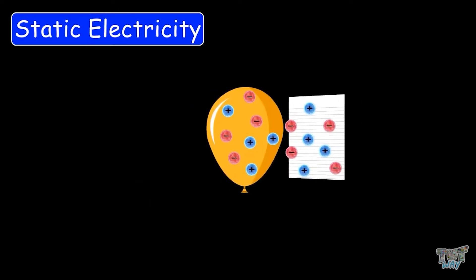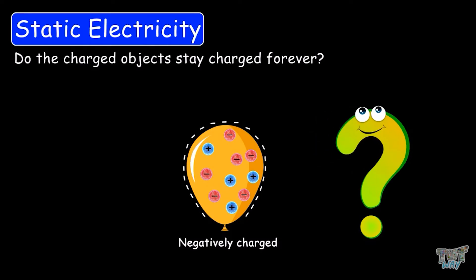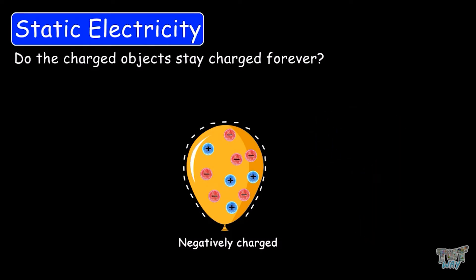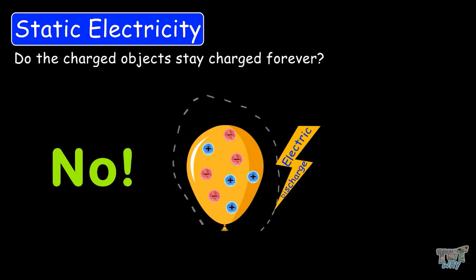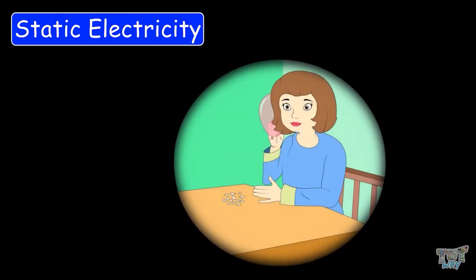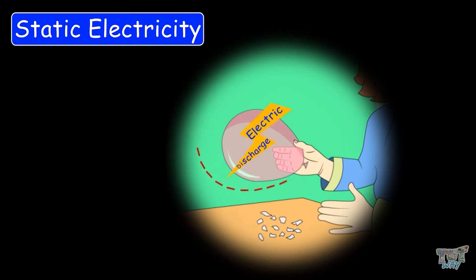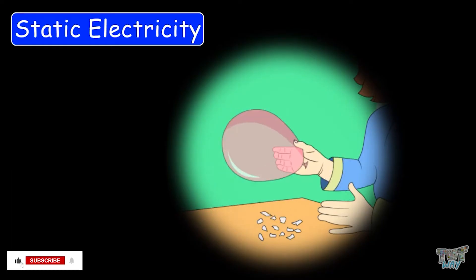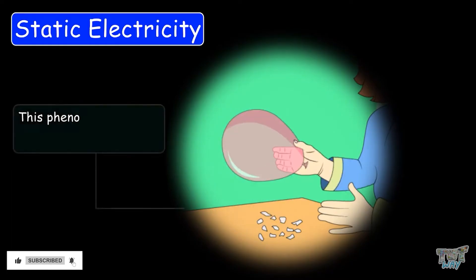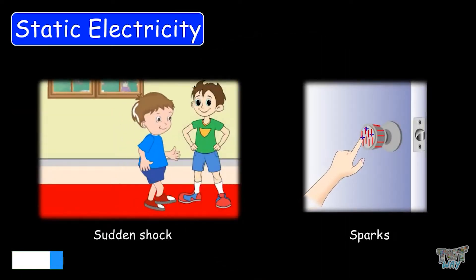Now, what happens to the static electricity? Do charged objects stay charged forever? No! The charge goes into the air and the objects become electrically neutral again. Once an object, say a balloon, is charged it attracts bits of paper, but after some time it won't — the charge is discharged into the air. This phenomenon is called electric discharge, and it is experienced as sudden shocks or sparks.